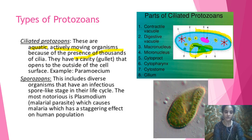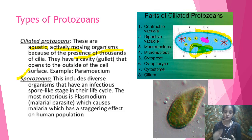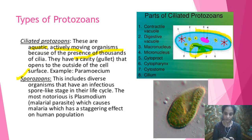The last sub-group is sporozoans — an infectious group. The best-known example is Plasmodium, which causes malaria. Plasmodium requires two hosts: a human host and a mosquito host — you will study this in detail in Class 12. There are infective spore stages by which it infects new organisms.